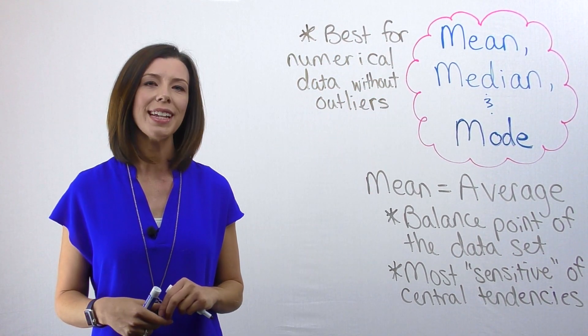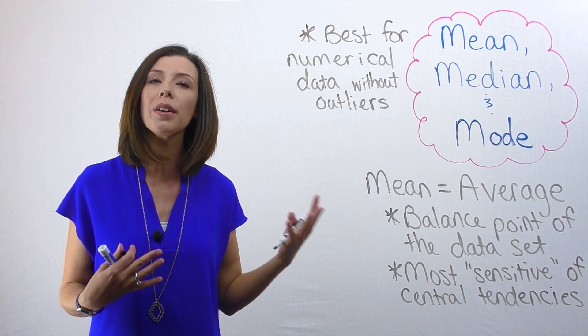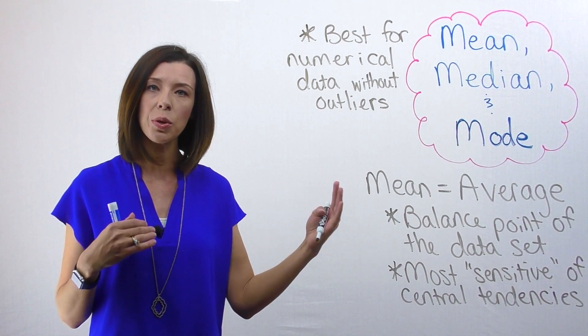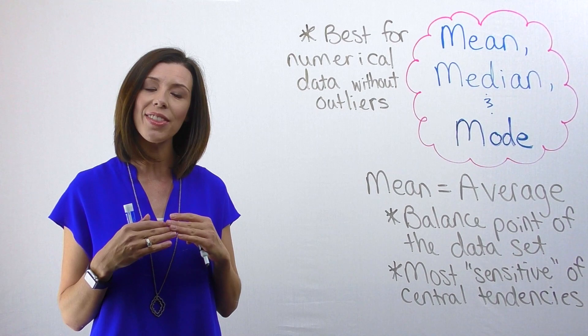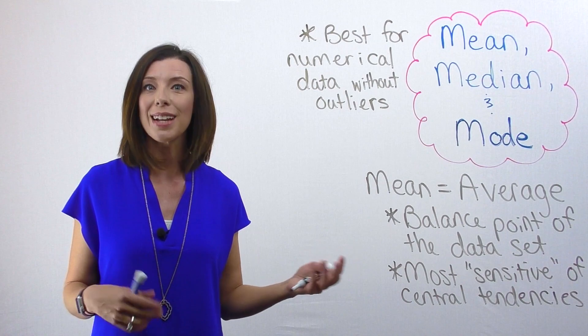To find the mean for a data set, we're going to add up all of our data values and then divide that by the number of data points that we have available. So if I have 10 scores, I'm going to add all of those scores together and then divide by 10 since that's my number of data points or my number of test scores.